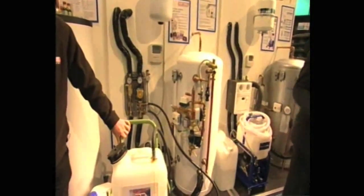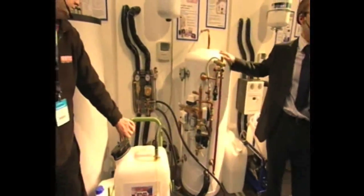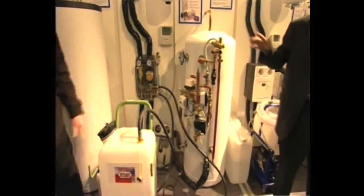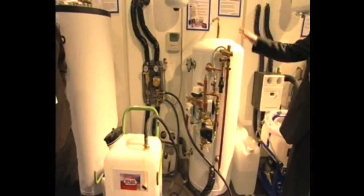They're typically available as packages. And what you get is the collector on the roof with the kit and a cylinder, which will either be an existing cylinder with a coil or a replacement cylinder. Or in a new build, you need a cylinder anyway.